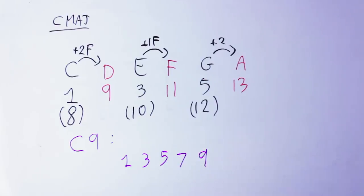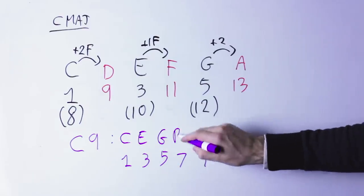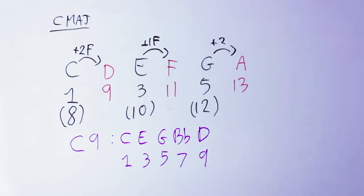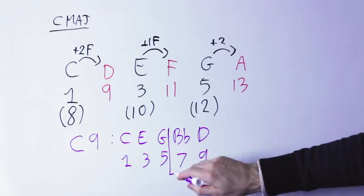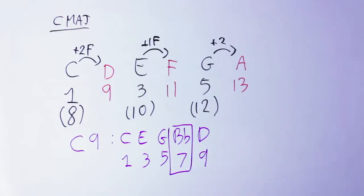all the odd numbers up to the nine. So the notes of C9 are C, E, G, B flat D. B flat being the minor seventh, which is the seventh we include by default, and if you're unfamiliar with that, go and look the seventh chord video.